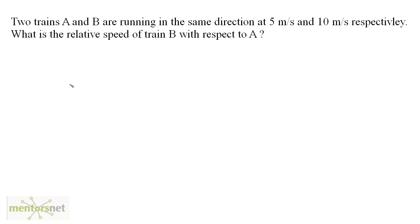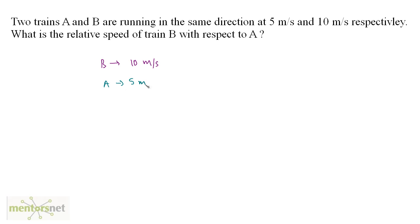Let us solve a question now. You have two trains A and B running in the same direction at 5 meters per second and 10 meters per second respectively. What is the relative speed of train B with respect to A? The speed of train B is given to us which is 10 meters per second, and the speed of A is 5 meters per second.